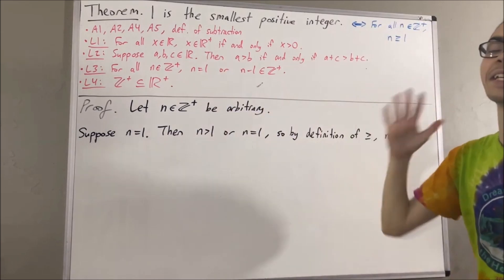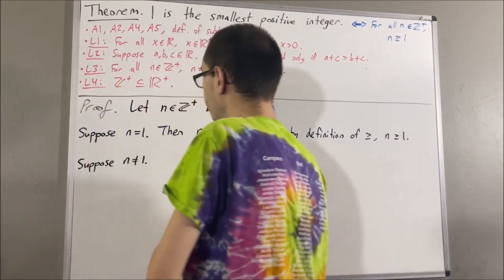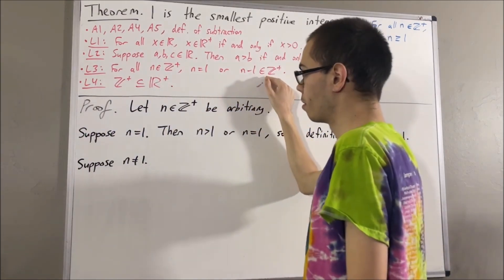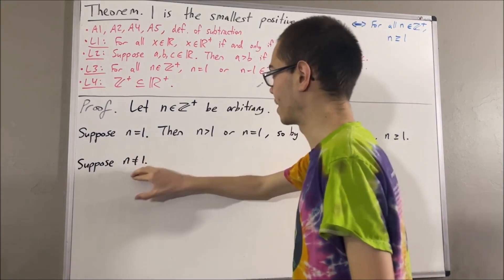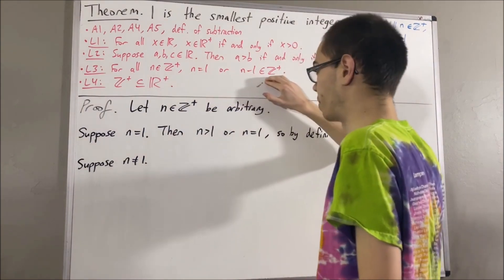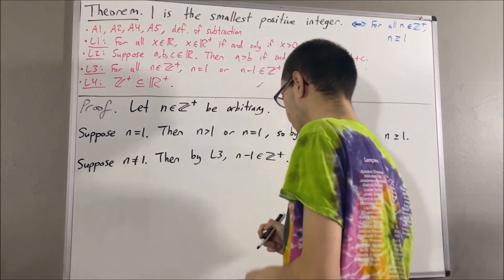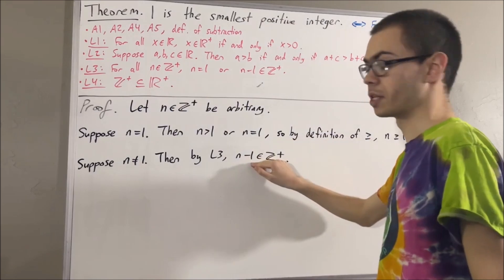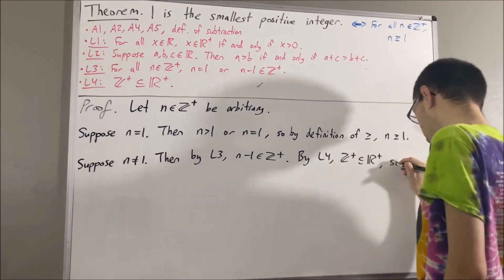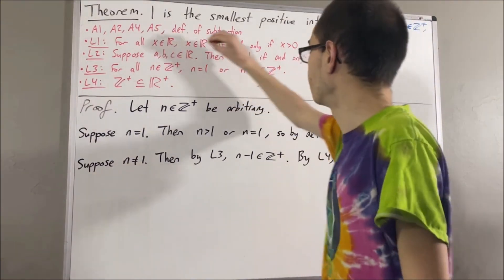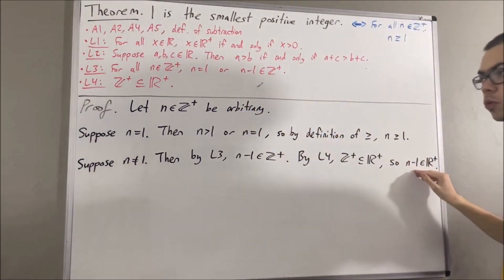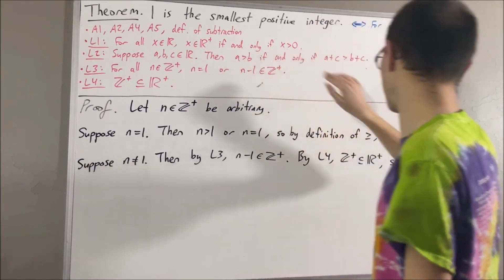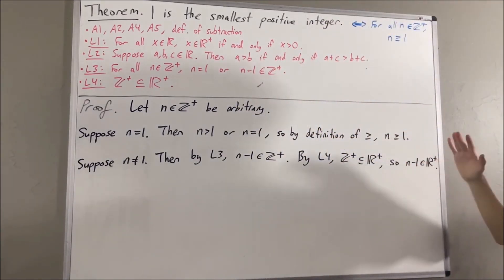Now consider the case that n is not equal to one. Applying L3, we have: n is equal to one or n minus one is a positive integer. Since n is not equal to one, this eliminates that possibility, so we must have that n minus one is a positive integer. By L4, every positive integer is a positive real number, so n minus one is a positive real number. Then by L1, taking x to be n minus one, n minus one is a positive real number if and only if n minus one is greater than zero. So we conclude that n minus one is greater than zero.